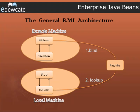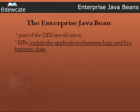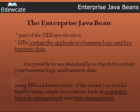We learnt quite a bit of RMI to start off with the EJBs. So, what is the EJB technology? EJBs are the J2EE specification. They mean much more than our plain old Java objects, or the POJOs, in the sense that EJBs hold your business logic also. Though it is actually possible to use standard Java objects to contain your business logic and business data, the world is talking about the usage of EJBs because they address many of the issues you would find due to the usage of simple Java objects, such as scalability, lifecycle management, and state management.